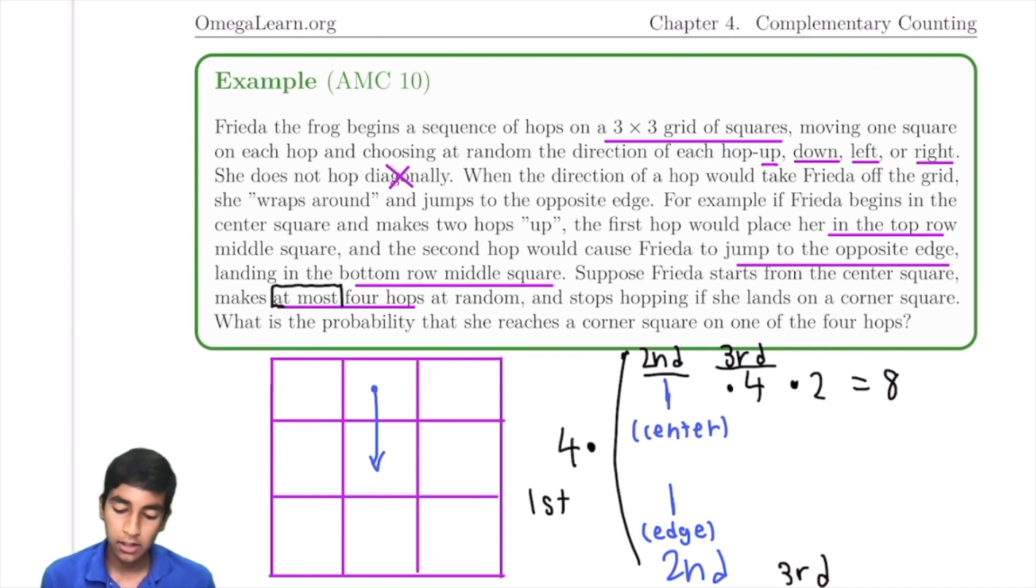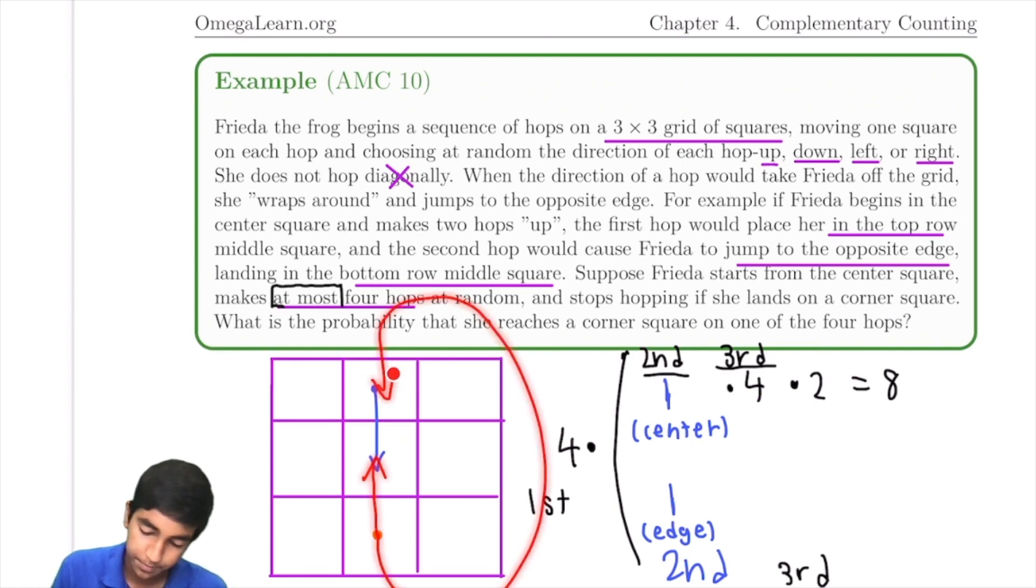So now what about this second case here, where on the second move, Frida goes to an edge. On the second move, if Frida goes to an edge, how many choices for the third move? Well, we can't go to the corners. Bad, illegal moves. Now, there's one where you can go back to the center, or we can wrap around. Two, two choices. So one, we go to a center on the third move. And another case, edge.